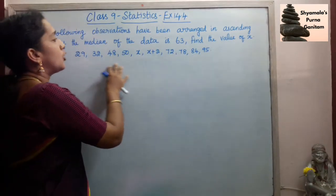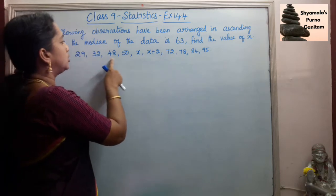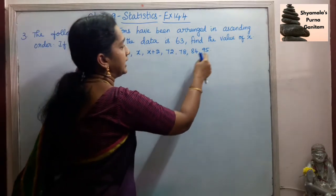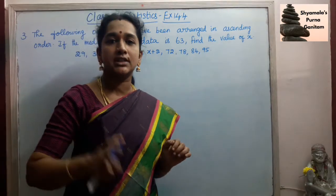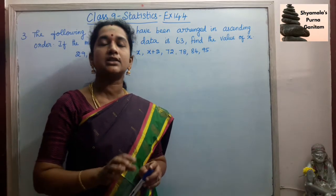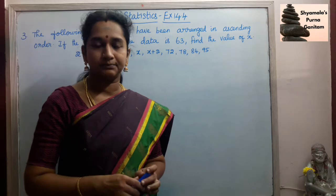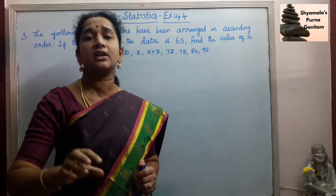So first we will check how many observations are there. 1, 2, 3, 4, 5, 6, 7, 8, 9, 10. So the number of observations is 10. So this is even number of data. Even number of data we are having.